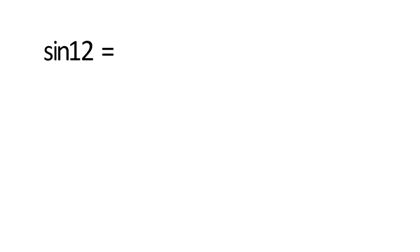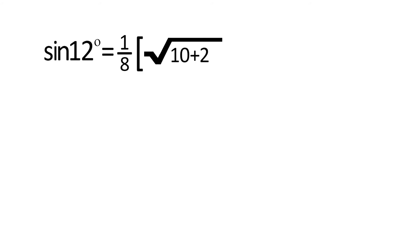After taking 4 out, we get (1/8) times (√(10 + 2√5) minus √3 times (√5 minus 1)).